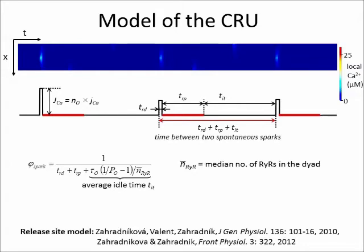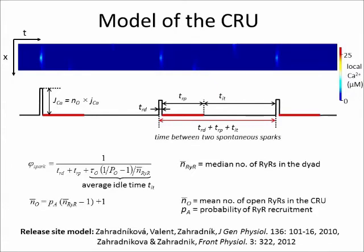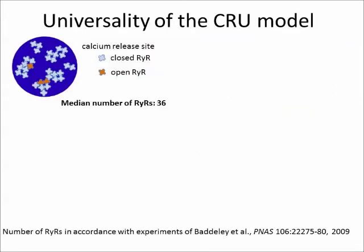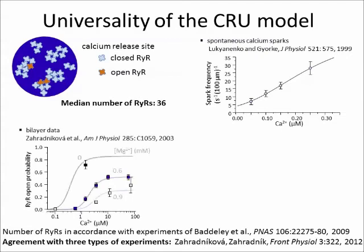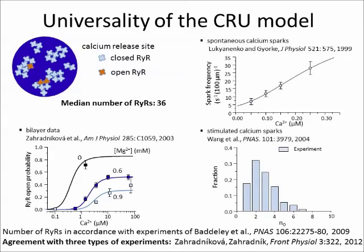The average number of open channels in one calcium release unit depends on its size and on the probability of RYR recruitment, PA, numerically calculated from the parameter PDs. The median number of channels per calcium release unit was set to 36 in accordance with literature data. The same model parameters then quantitatively describe several widely different experimental situations: calcium dependence of calcium spark frequency in skinned cardiac myocytes; calcium dependence of ryanodine receptor open probability at several free magnesium concentrations; and the quantile distribution of calcium release flux amplitudes of calcium sparks evoked by electrical stimulation in cardiac myocytes.